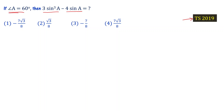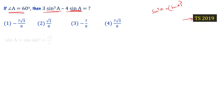We choose angle A equal to 60 degrees. First, sinA is equal to sin 60 degrees. Sin 60 degrees is equal to root 3 by 2.